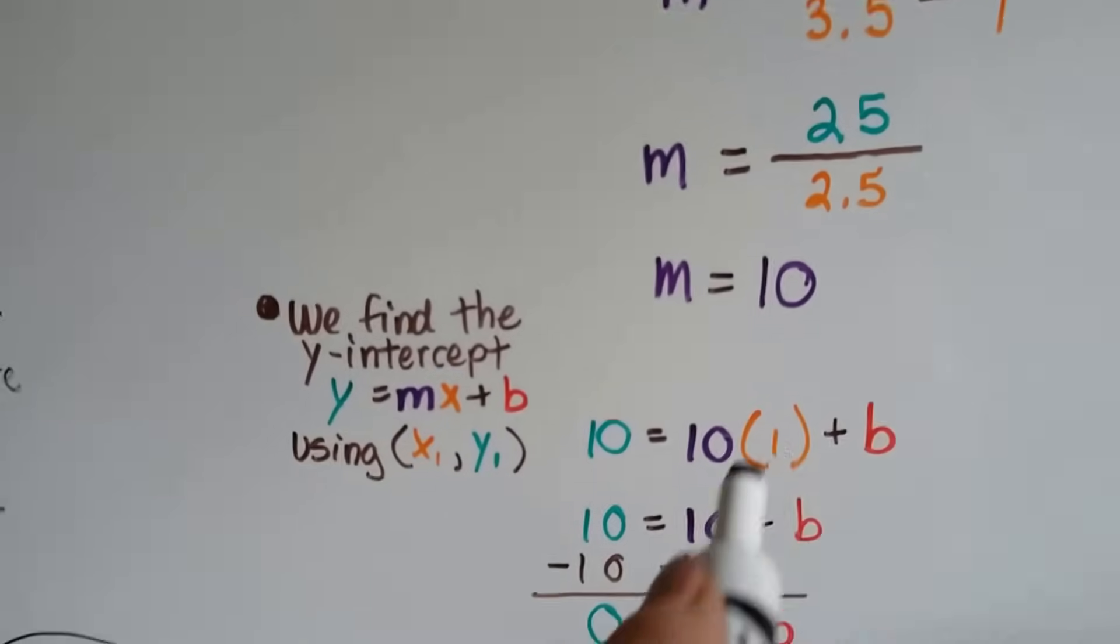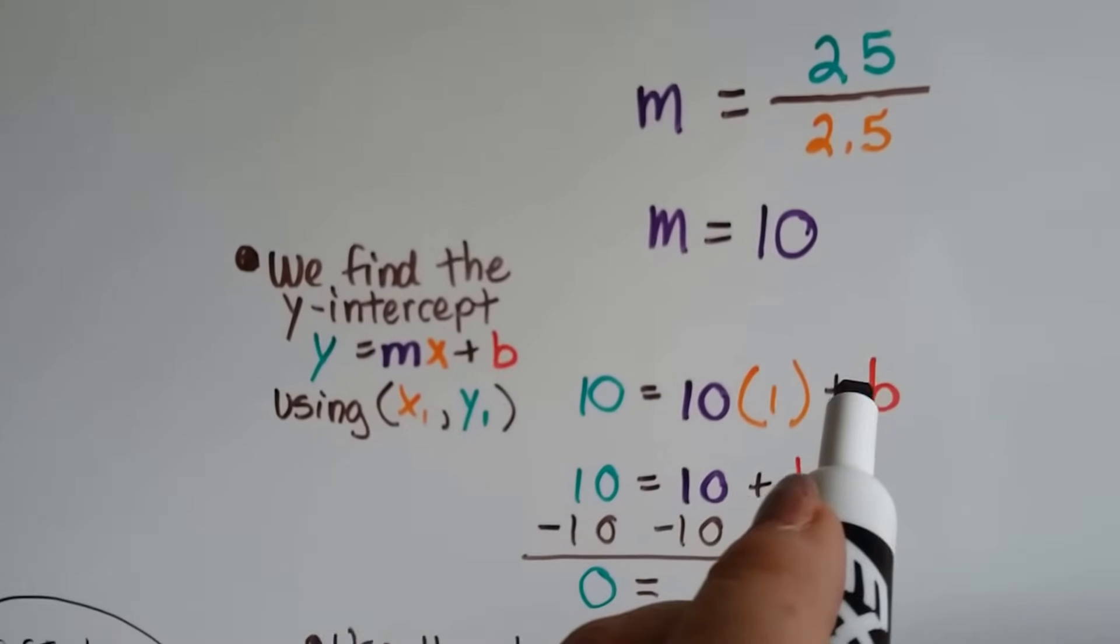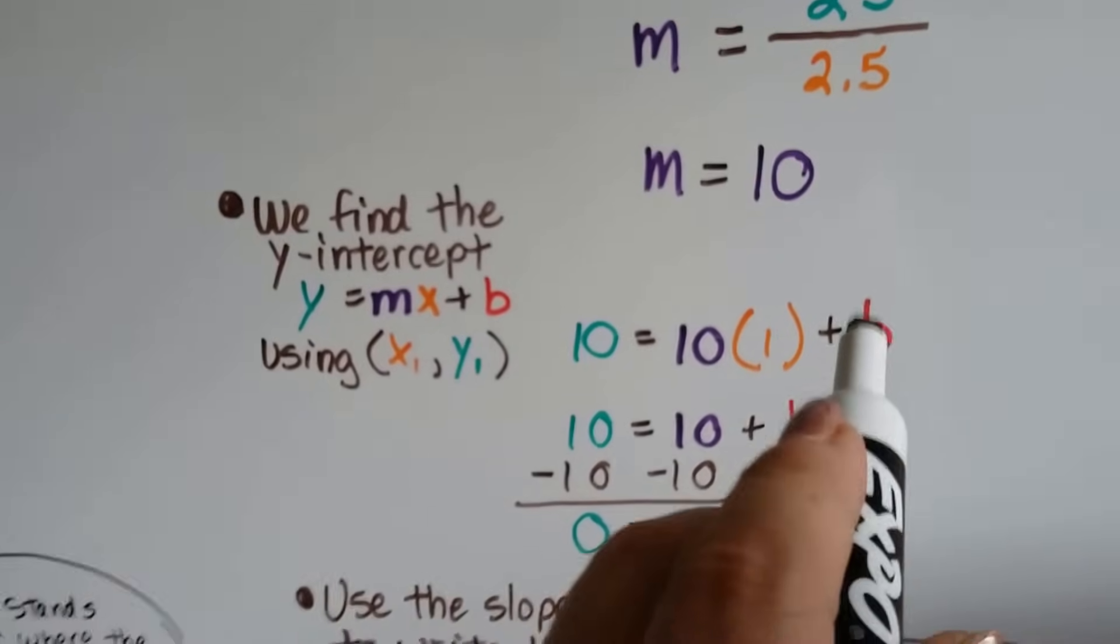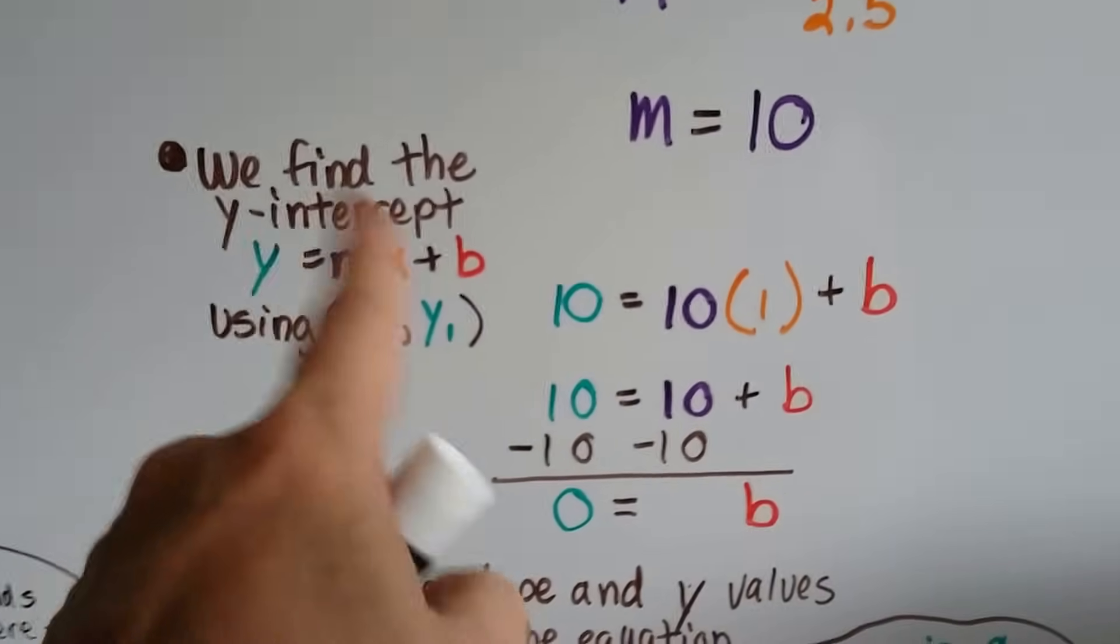And, then we have our b, the y-intercept. And, that's what we're trying to find. We're going to try to find this y-intercept b by doing this.